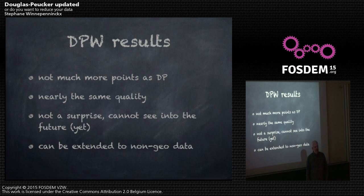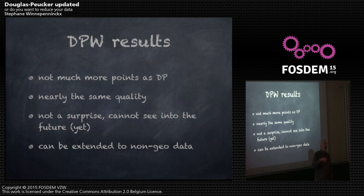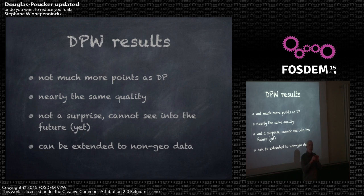You can do the same with non-geographic data — it's a little bit harder to visualize but I've done it with temperature. You keep the temperature outside: most of the time the temperature doesn't change so you don't need to keep every observation point. But if the temperature rises because it's morning and the sun shines, you will promote one of the observation temperature points to essential — the idea is just the same.